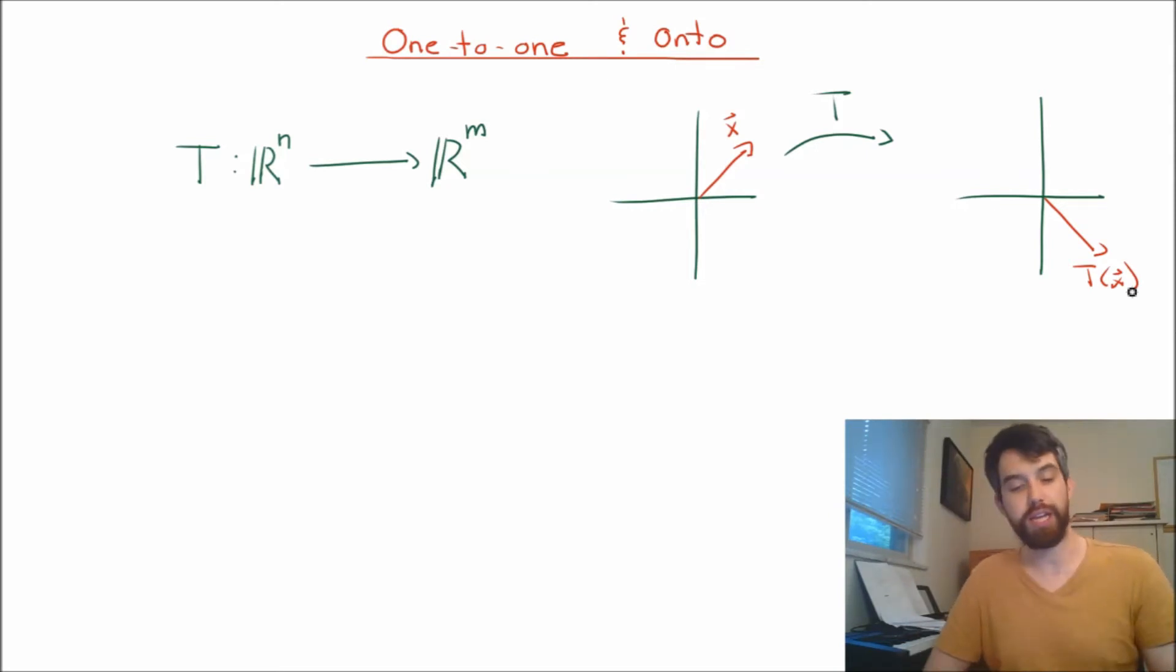Now there are a couple different questions I could ask given this setup. One is this: if my codomain is the portion on the right, that's my output, is it the case that the transformation takes something to every vector in the codomain? Is every single vector over here hit by something from the domain? We noticed that this T(x) was hit by the vector x. But if I draw some other random vector, is there some purple vector in the domain that's going to hit this output? That's going to be our first property, called onto.